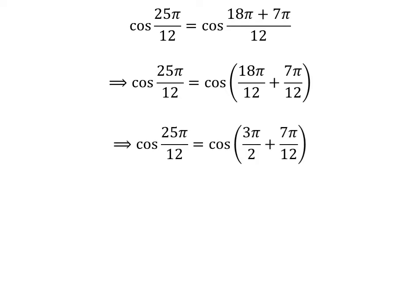Cancelling out the common factor in the numerator and the denominator in each fraction gives us cosine of 25 times pi upon 12 is equal to cosine of 3 times pi upon 2 plus 7 times pi upon 12.